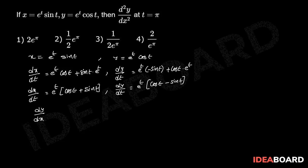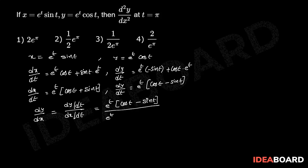dy/dx equals (dy/dt) divided by (dx/dt), which equals e power t times (cos t minus sin t) divided by e power t times (cos t plus sin t). Cancelling e power t, this simplifies to tan(π/4 minus t).